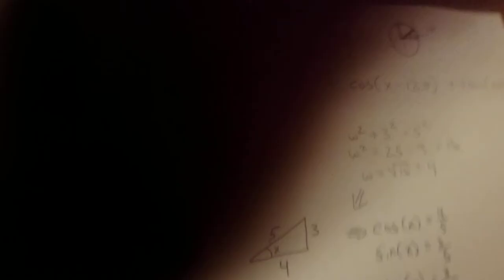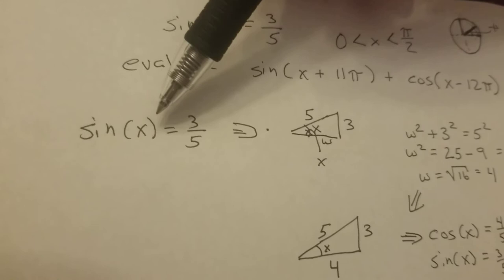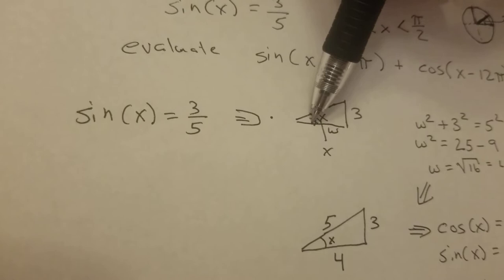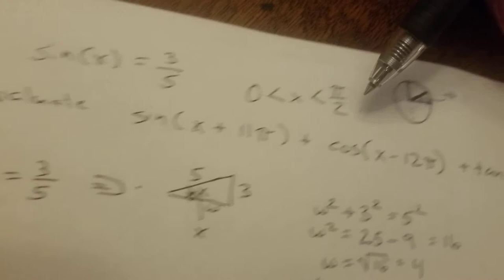So what you need to do, you take the first thing they told you, sine of x equals 3 over 5. And what that means is you have a triangle, and x is this angle over here, kind of the same thing as the angle there. I've just drawn the triangle part.